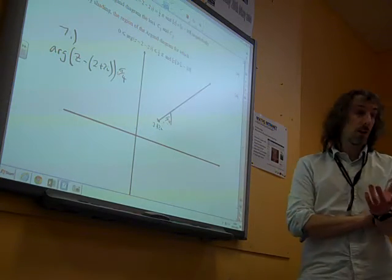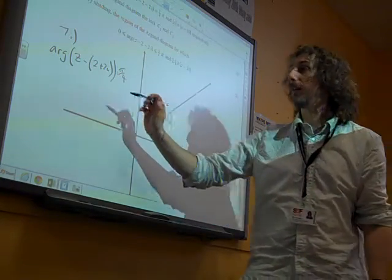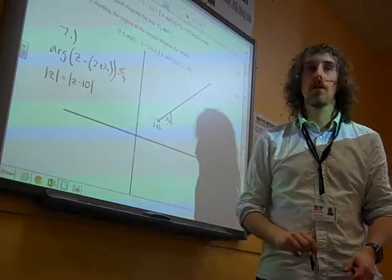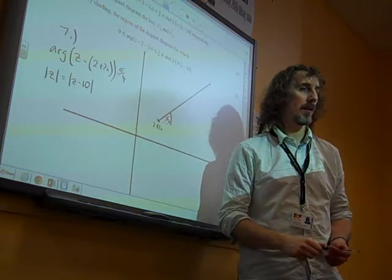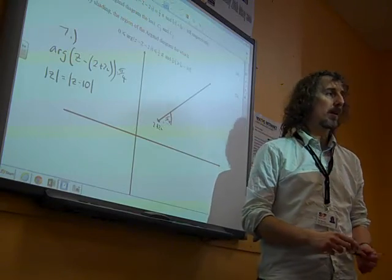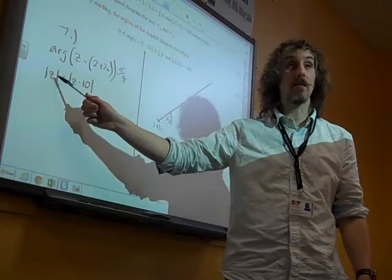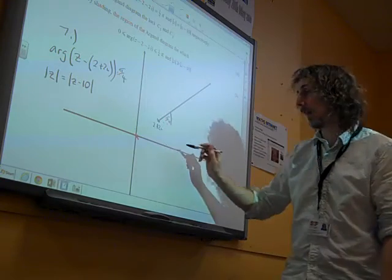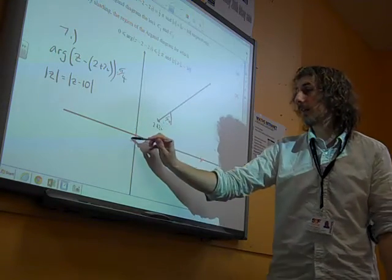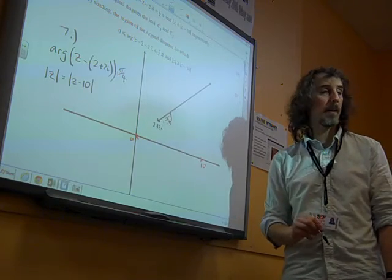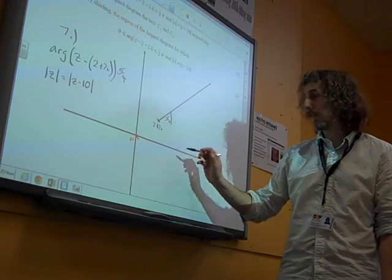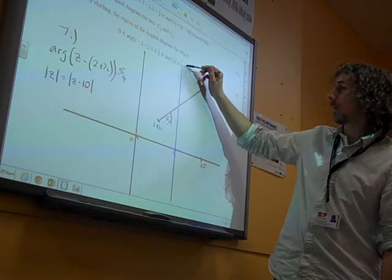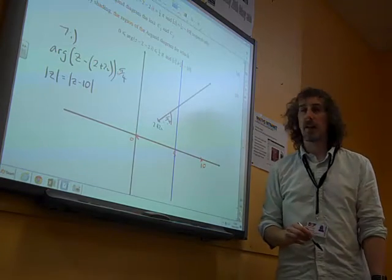The other one, now the other one, z and z minus 10. Now remember this one, this is the perpendicular bisector of these two points. So what we're looking for is the perpendicular bisector of 0, in that case, and the point 10, on the real axis, in this case. So there's 0, and there's 10, so the perpendicular bisector of that, halfway between them, is at 5, and we want a vertical line going through the point 5. And so that's our other one.